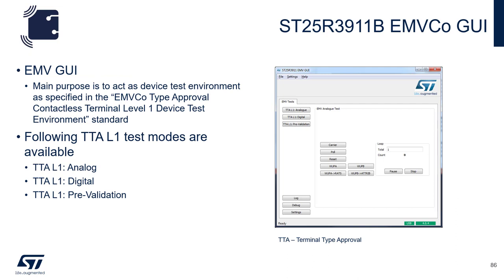The EMVCO reference design also comes with a GUI. The main purpose of the GUI is to act as a device test environment as specified in the EMVCO specification. There are three test modes available: analog, digital, and pre-validation. In addition to test modes, the GUI is also used to set up the individual registers inside the 3911B.